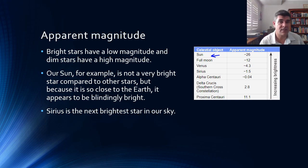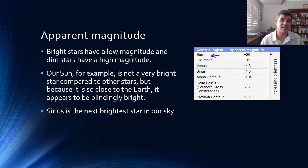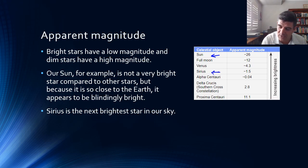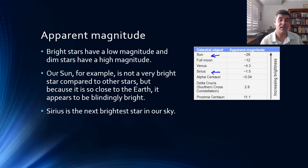The Full Moon, which is reflecting the light from the Sun, is minus 12. The next brightest star on the apparent magnitude scale is Sirius, which is minus 1.5. So we still haven't quite reached the positive numbers yet. Alpha Centauri sneaks in into the negative numbers, and then so on.